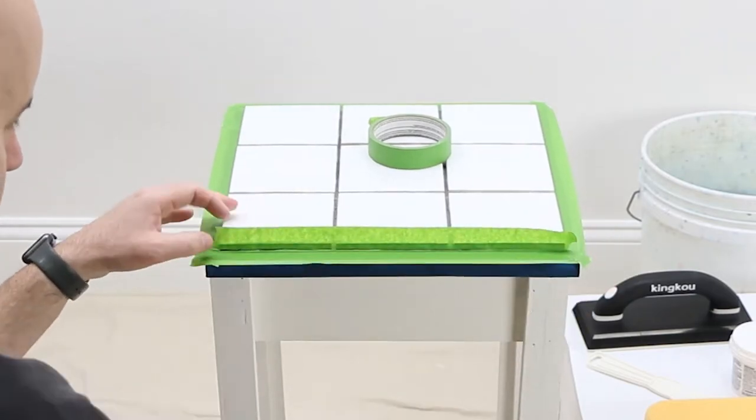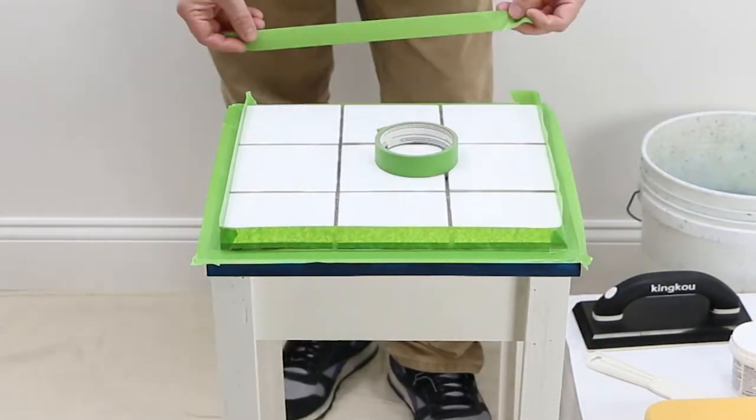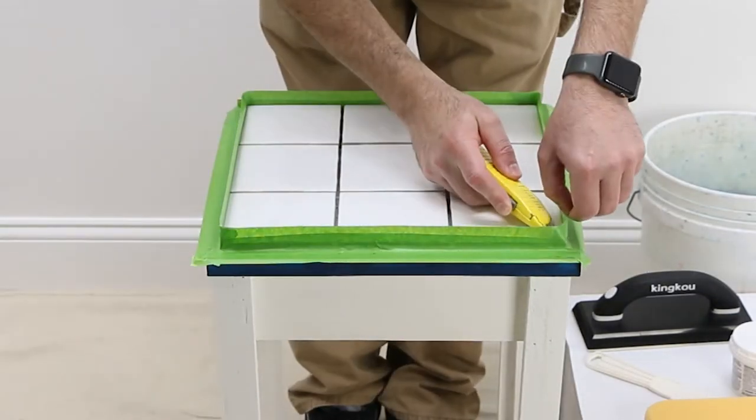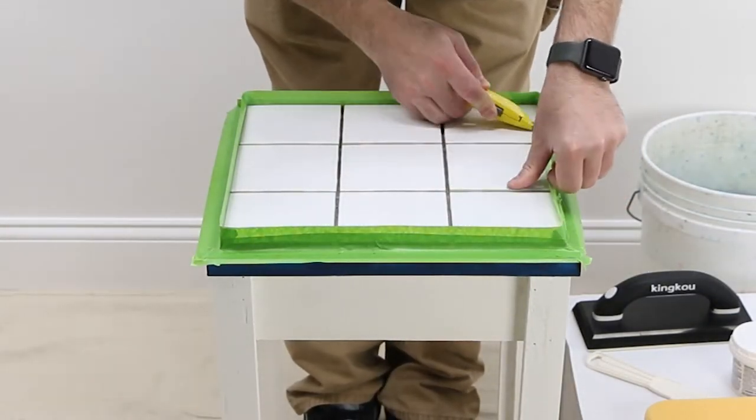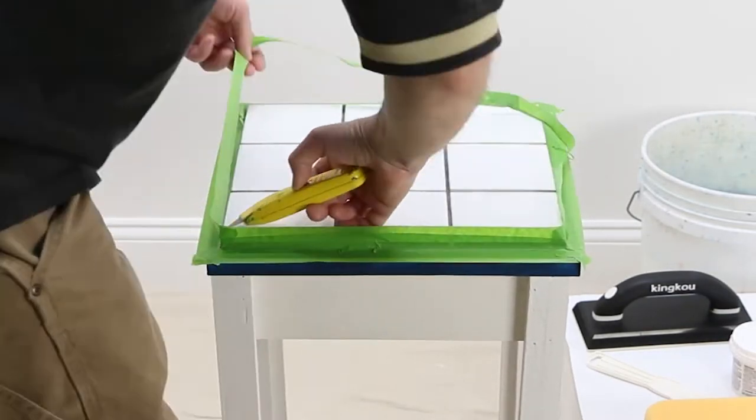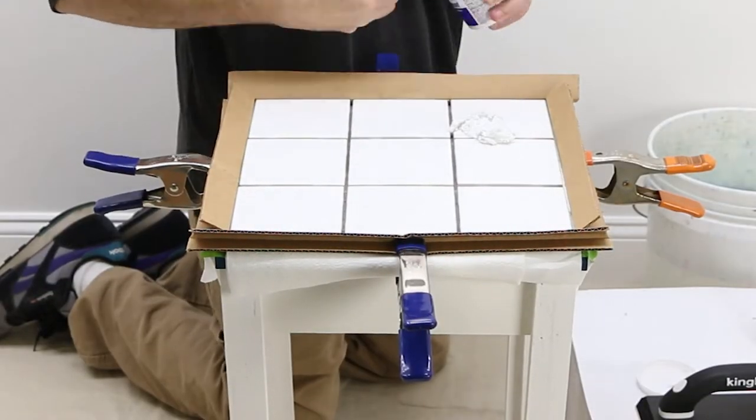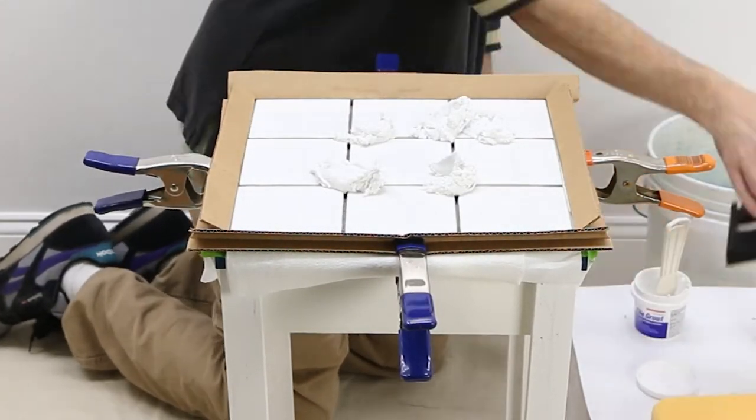Also, tape the outer edge of the tiles and trim flush using a utility knife. You may also want to place some cardboard over the tape as an extra layer of protection.